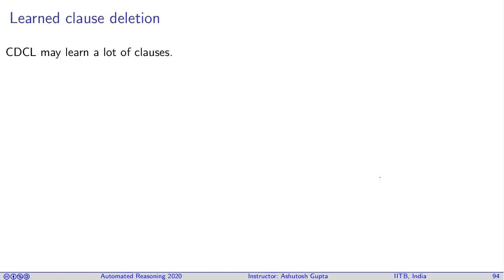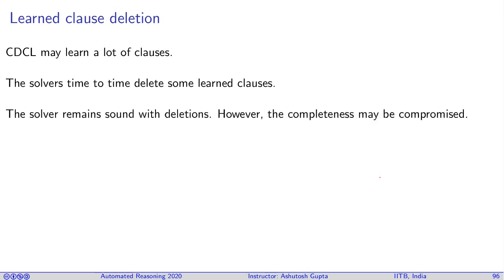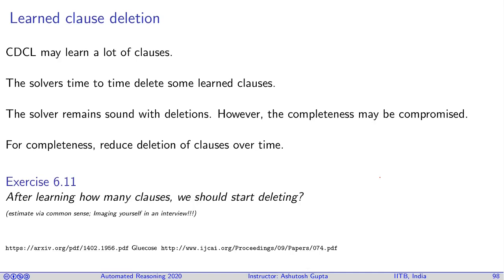Next choice is learned clause deletion. CDCL over time may learn a lot of clauses and the solver may get bogged down. So what do solvers do is time to time delete some learned clauses. A solver remains sound with these deletions. However, the completeness may be compromised. You may be learning same clauses again and again, and then you are not complete. You initially aggressively delete, but over time you delete less and less.